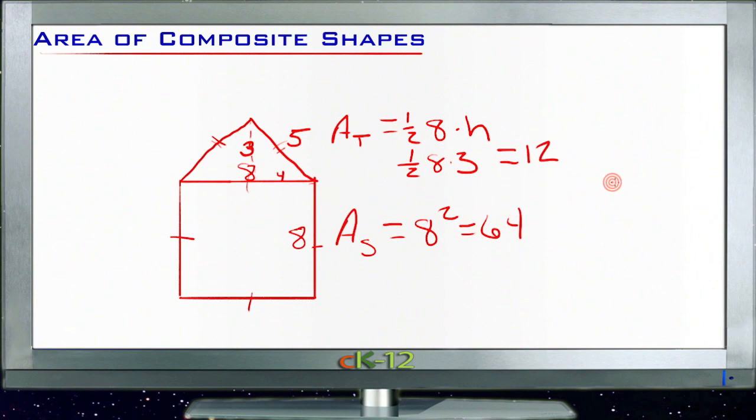So then the area of the entire figure would be 12 plus 64 or 76 square units. So really all you have to do to find the area of composite shapes is just break the shape up into shapes that you recognize, and then find the area of those individual shapes, and then add it together to find the total area at the end. Alright? Let's take a look at the examples.